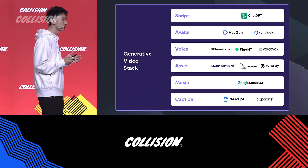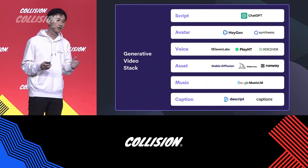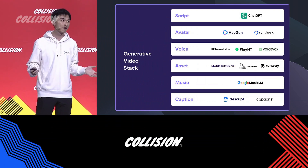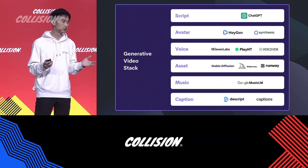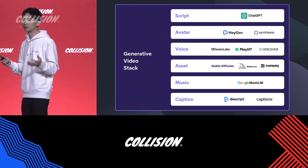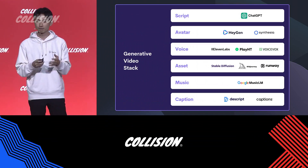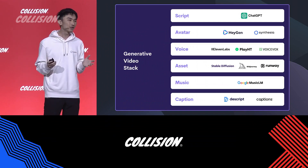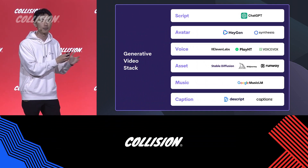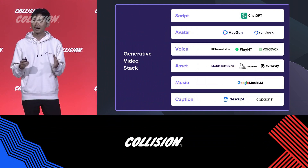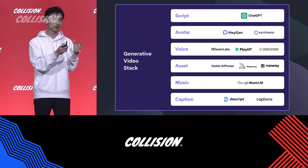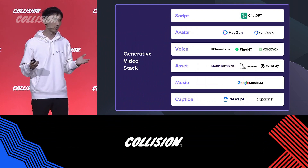This is what we think the generative video stack looks like today. We have ChatGPT for copywriting and script. We have both HeyGen and Synthesia creating high-fidelity, high-quality avatar videos. We have a couple of players in voice technology, and we have Stable Diffusion, Midjourney, and RunwayML generating assets. And last, music and captions. What we are doing at HeyGen today is first building the entire A-roll videos I just presented, and second, integrating and baking all this B-roll technology together into a seamless product experience so that we can create a video with just one click from end to end.